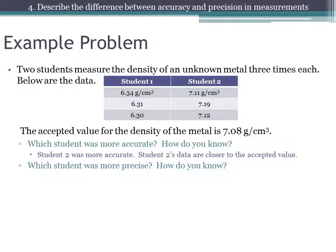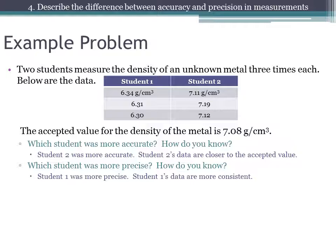Next question: which student was more precise? This has nothing to do with how close they are to the accepted answer. It deals with the consistency of their measurements. If you look at the range of the measurements, student one's data are closer together than student two's, so student one is more precise because student one's data are more consistent.